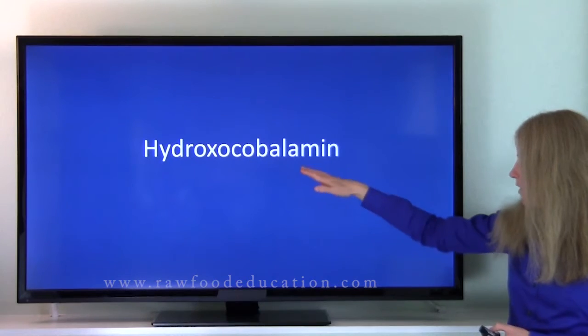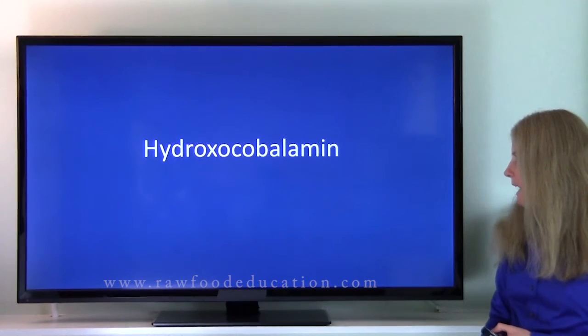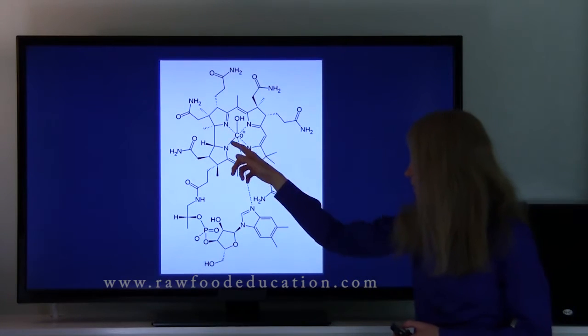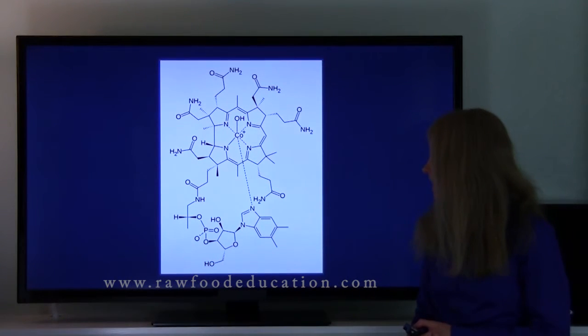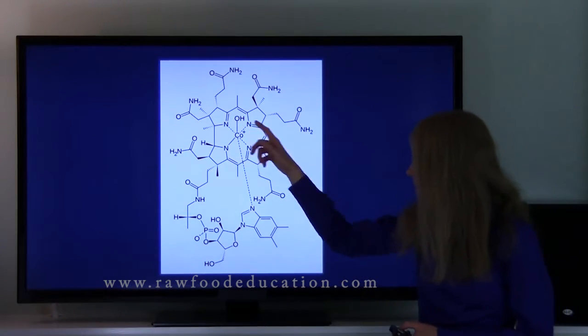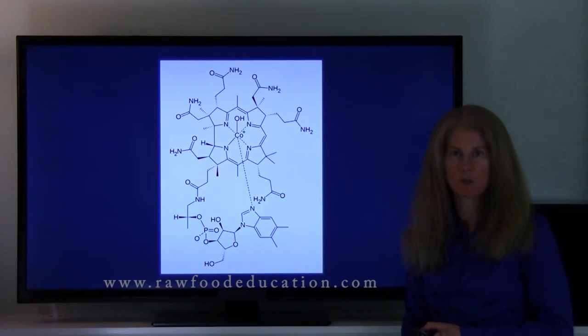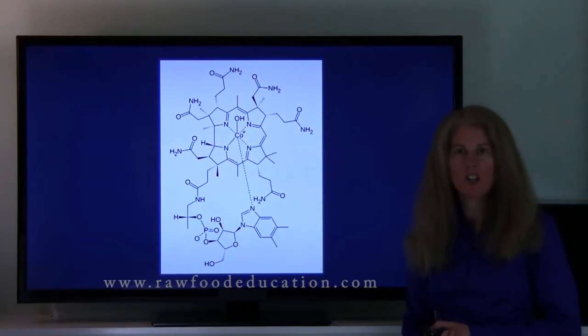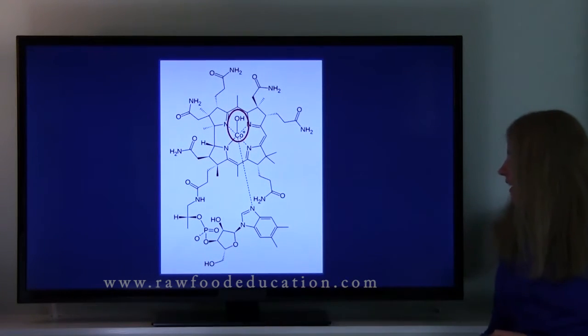The first one we're going to talk about is hydroxocobalamin. And here's a picture of it right here. And in the center of the molecule, we see cobalt. And what's attached to that cobalt is a hydroxyl group, an OH group, which is an oxygen and a hydrogen hooked together by a bond. There it is right there.